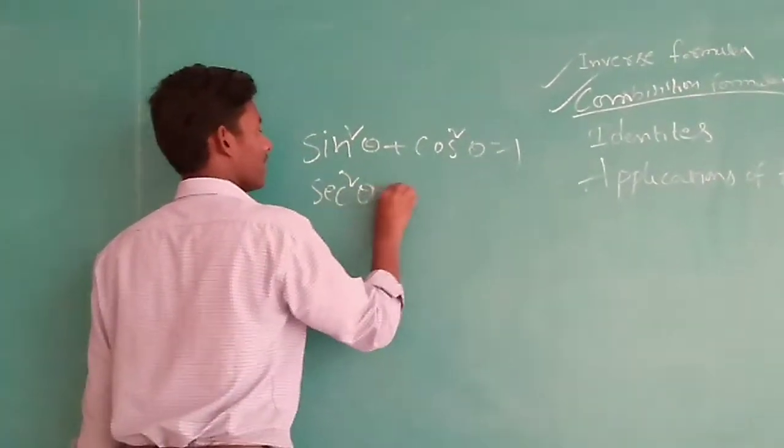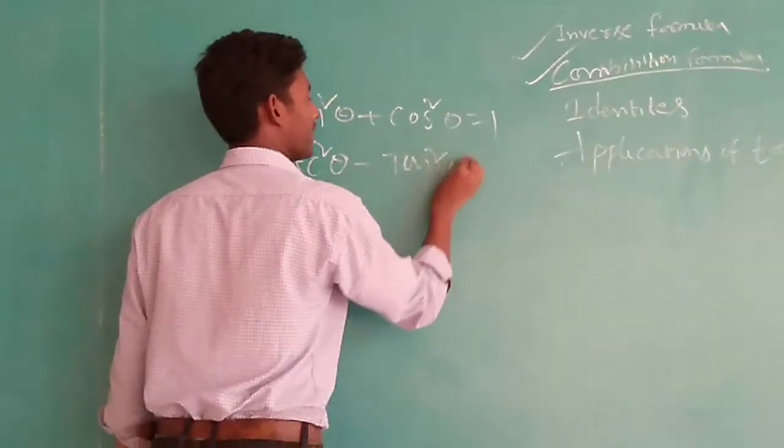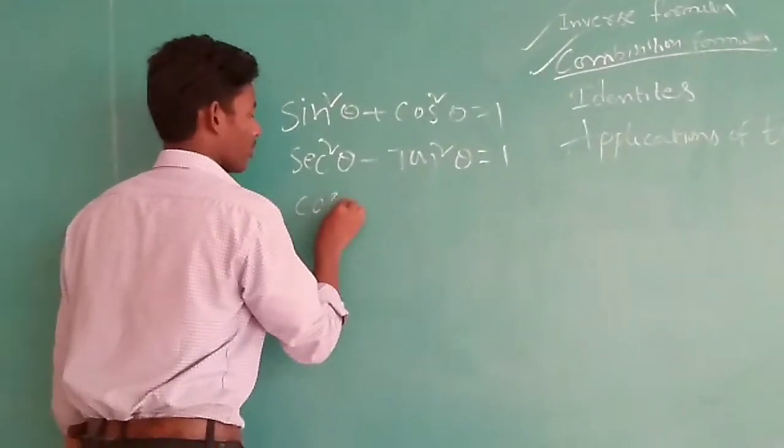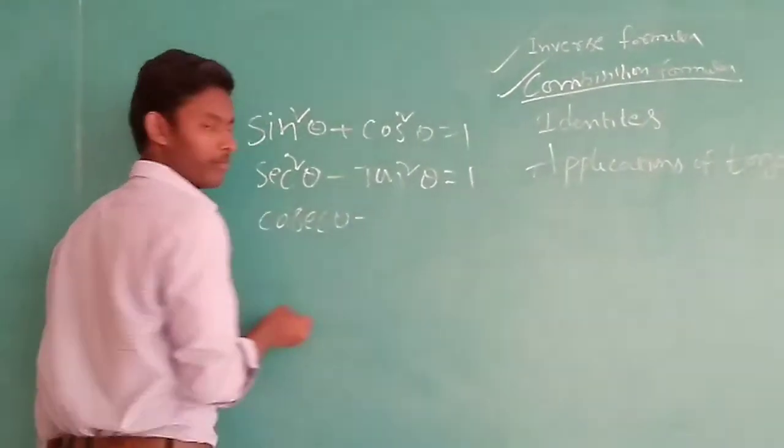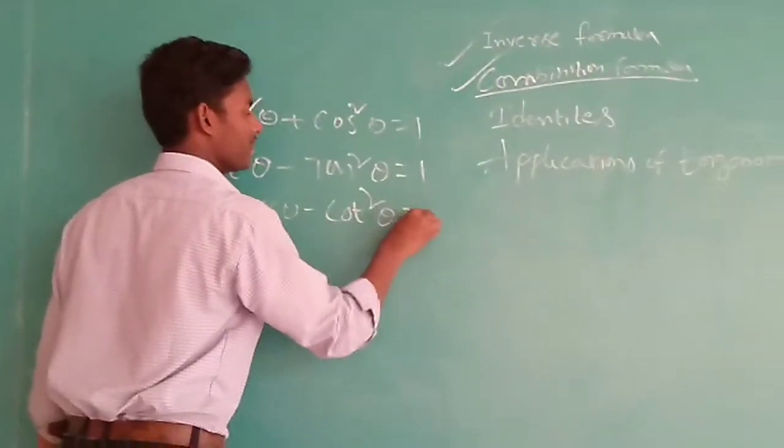Next, sec square theta minus tan square theta equals 1. And the final one is cosecant square theta minus cot square theta equals 1.